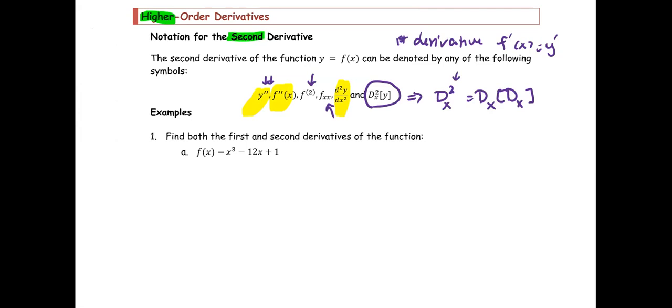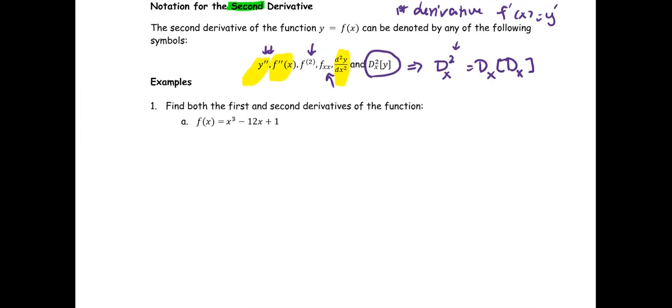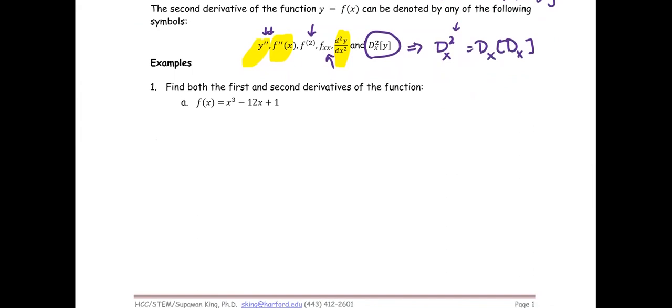The first set of examples are about skills problems where you have to find both first and second derivatives of the function. As you see, f'(x) is just the derivative of x³ - 12x + 1 to get 3x² from the term x³, negative 12 from the term negative 12x, and then zero from the derivative of one. Next, we just keep doing the same thing and that's just 6x.